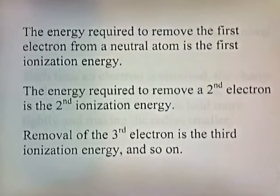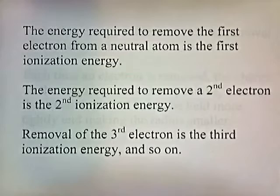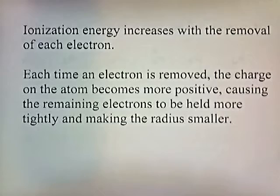The energy required to remove the first electron from a neutral atom is the first ionization energy. The energy required to remove a second electron is the second ionization energy. Removal of the third electron is the third ionization energy, and so on. Ionization energy increases with the removal of each electron. Each time an electron is removed, the charge of the atom becomes more positive, causing the remaining electrons to be held more tightly and making the radius smaller.